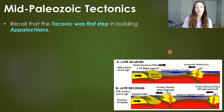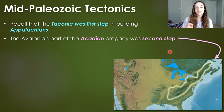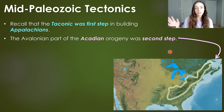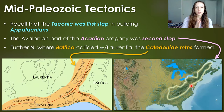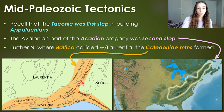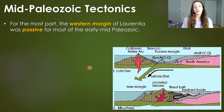The Taconic orogeny was the first step of mountain building of the Appalachians, and then the second step was the Acadian orogeny — specifically the Avalonian part, the southern part of the Acadian orogeny, represents the second step of mountain building in the Appalachian region. The northern part, where Baltica hit Laurentia, represents what formed the Caledonian mountains, which eventually split to be partly in Greenland and partly in Scandinavia.